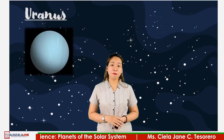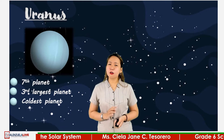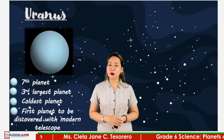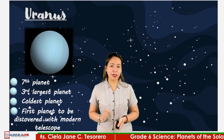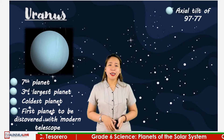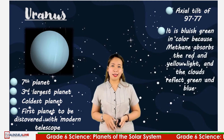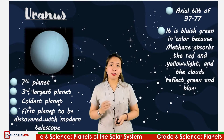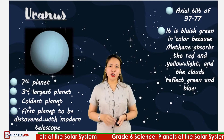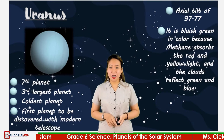Uranus is the seventh planet and the third largest of the solar system's gas giants. It is the coldest planet in the solar system. It was the first planet to be discovered with the use of a modern telescope, by English astronomer William Herschel in 1781. It has 27 moons; some of them are named Miranda, Ariel, and Titania. It has an axial tilt of 97.77 degrees. It is bluish-green in color because methane absorbs red and yellow light while the clouds reflect green and blue.